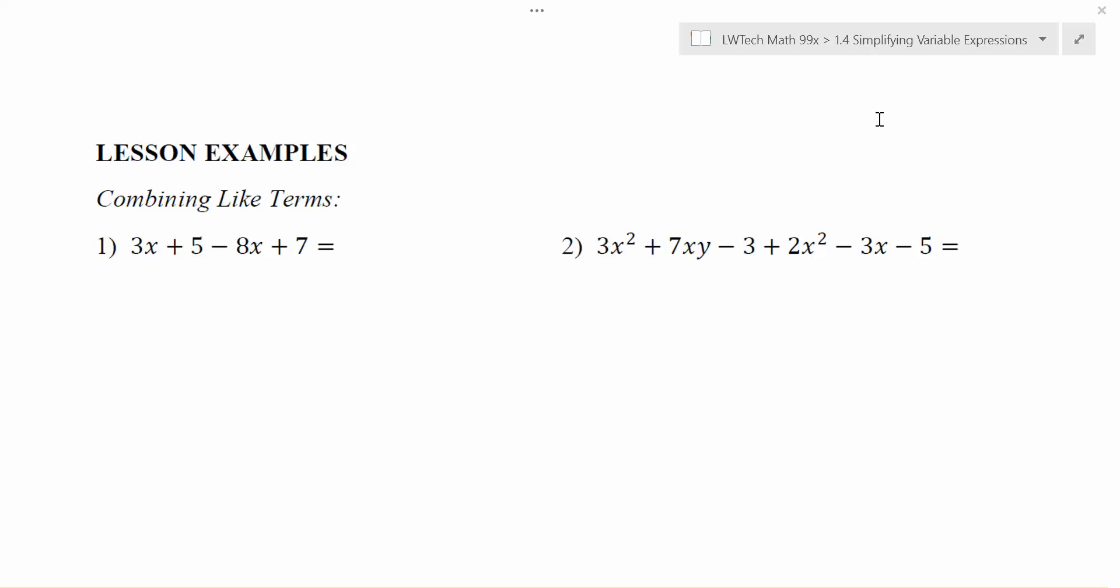Well, one of the things that we're allowed to do is we're allowed to combine things that are like terms. So what makes something a like term? Things are like terms if they are constant terms, so we can add plain numbers with other plain numbers. So for example, in this problem here, we could add the 5 and the 7 together, and those would be considered like terms that we would be allowed to combine.